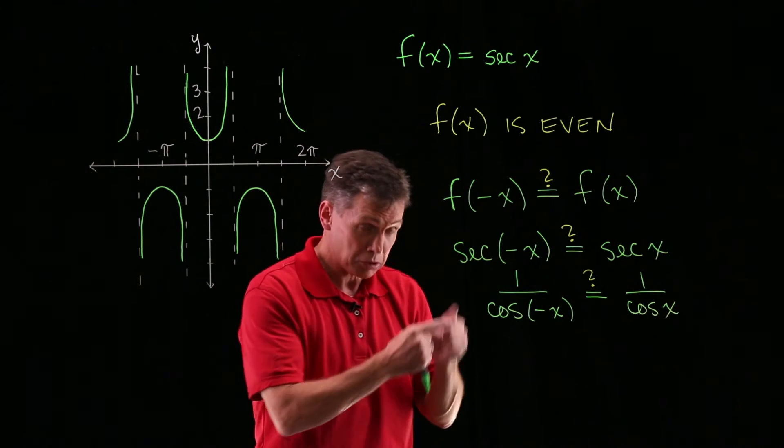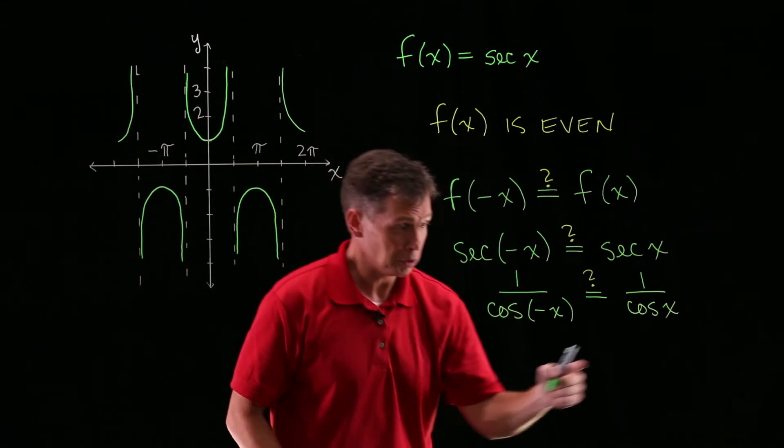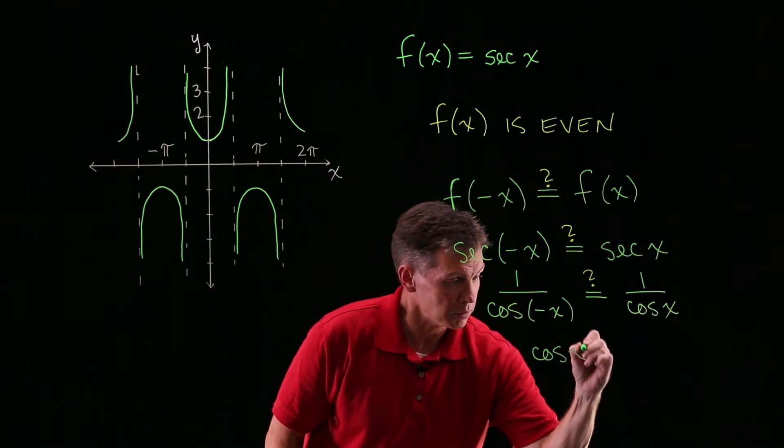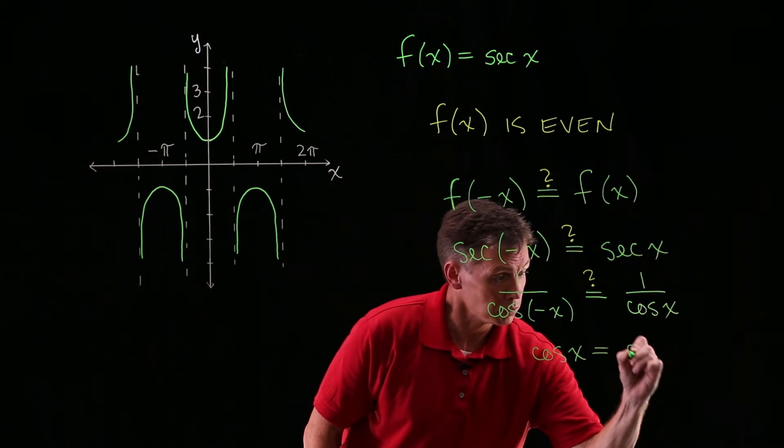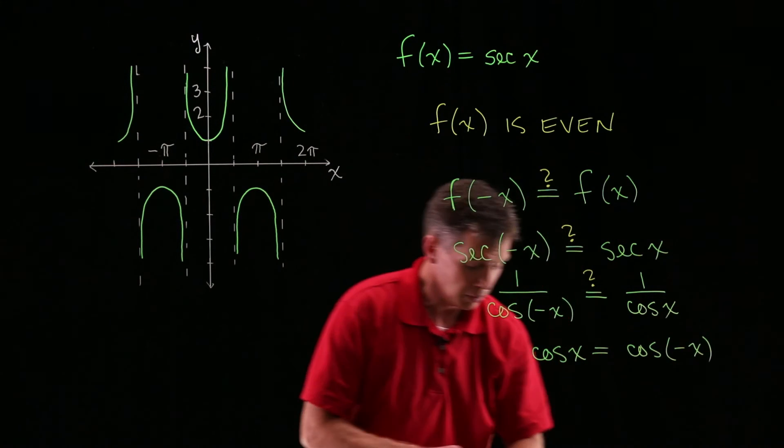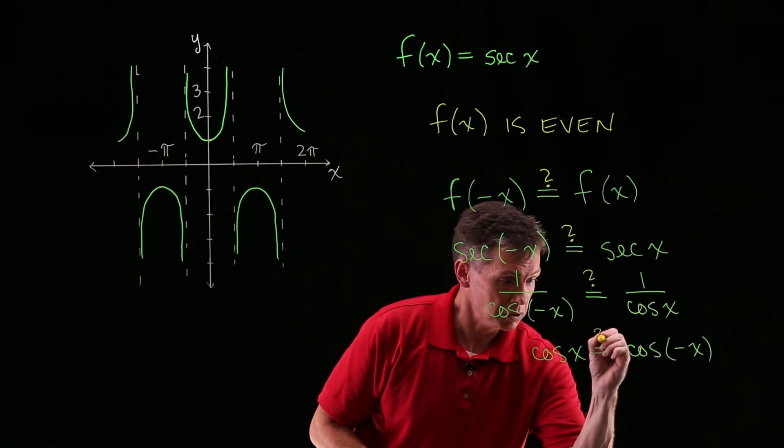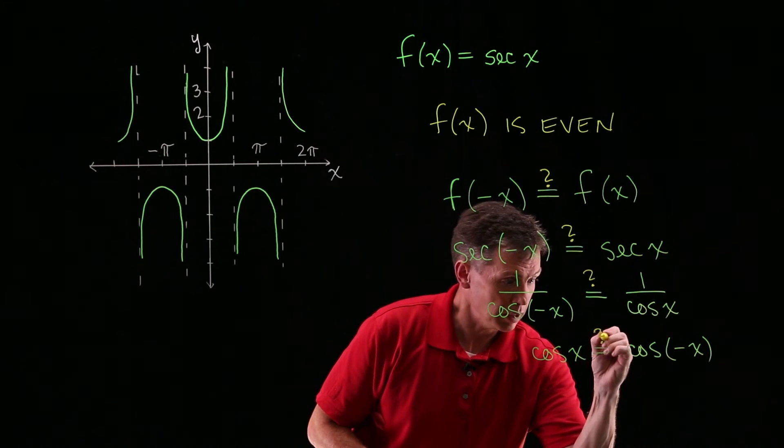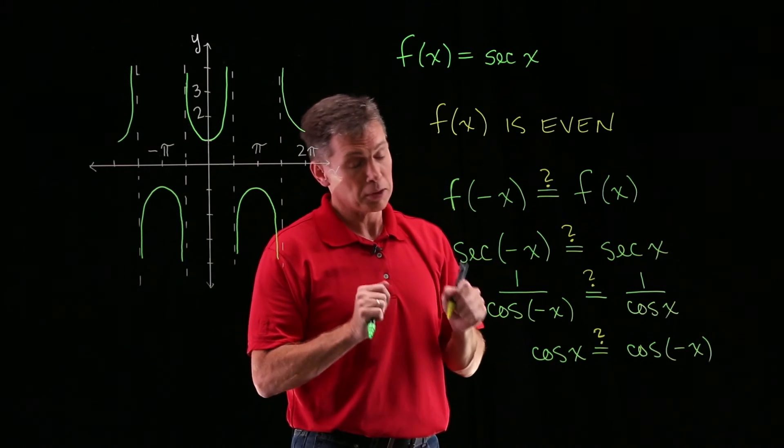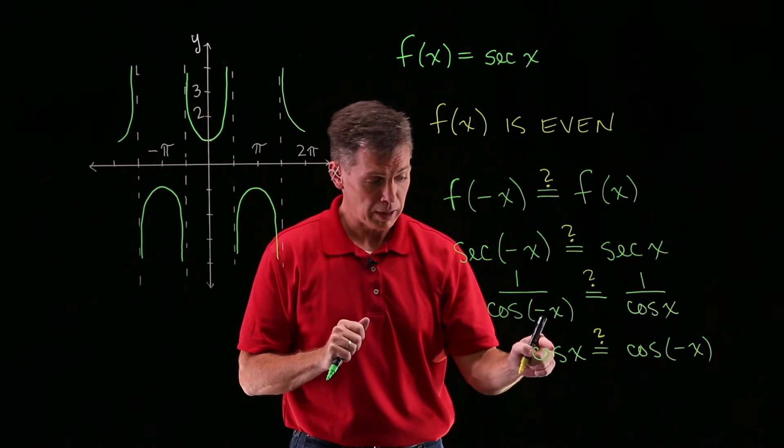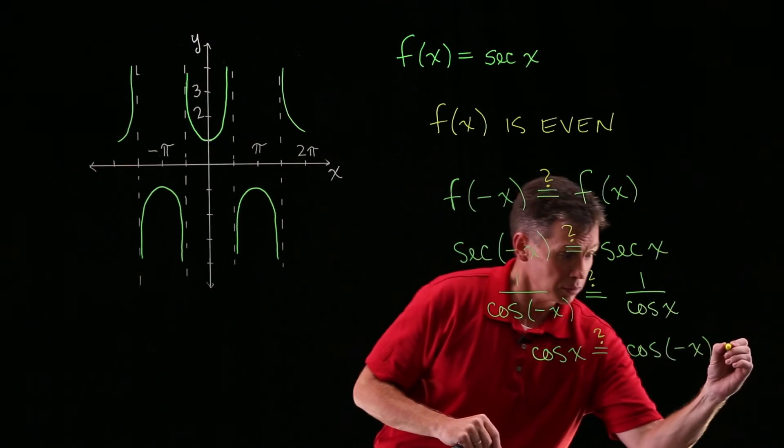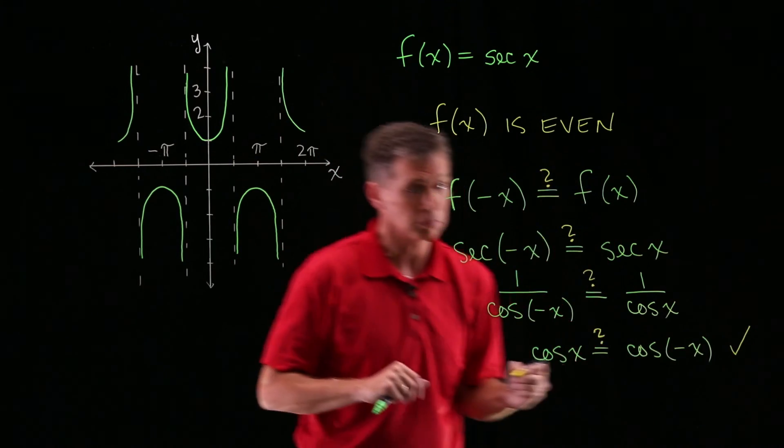Now what I'll do to answer that question mark is maybe even do a cross multiply. If I cross multiply, I'll get cosine of x equals cosine of minus x. Still has a question mark though. Is that true? And that is true. That's one of the identities that you learned in this lesson. The cosine of x does equal the cosine of minus x. So that is confirmed.